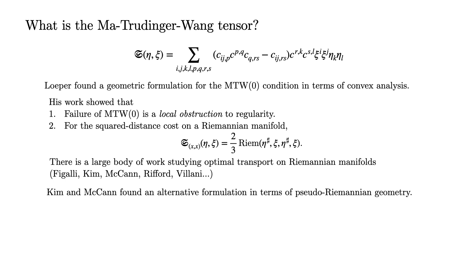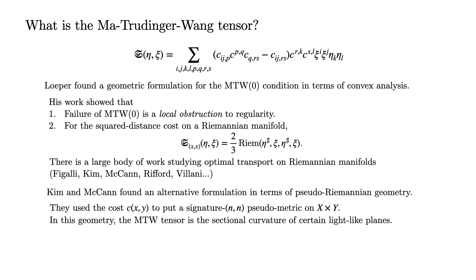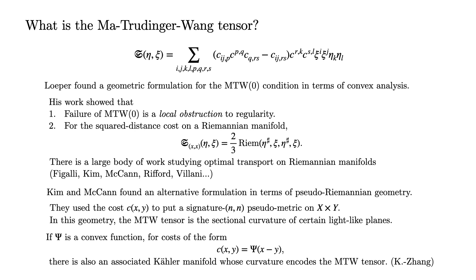Another interpretation for the MTW tensor was found by Kim and McCann, this time in terms of pseudo-Riemannian geometry. They considered the space X × Y and used the cost function to induce a signature (n,n) pseudometric. In this geometry, the MTW tensor becomes the curvature of certain light-like planes. Doing this immediately explains some of its fundamental properties, such as why it is a tensor. There are other geometries which can be associated with optimal transport as well. For instance, for costs which are induced by a convex potential, there is an associated Kähler geometry. In particular, it is possible to construct a Kähler metric whose curvature encodes the MTW tensor. More generally, this line of work to better understand the geometry of the MTW tensor gives new insight into the regularity theory of the Monge problem and allows us to more fully understand the behavior of optimal transport. It also highlights some unexpected interplay between geometry and analysis, which has applications in other areas of mathematics.